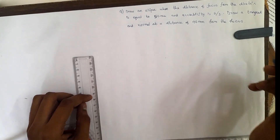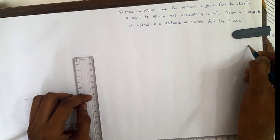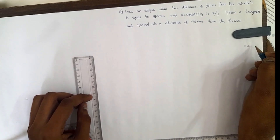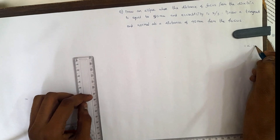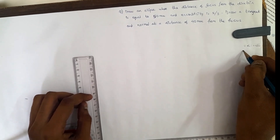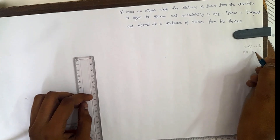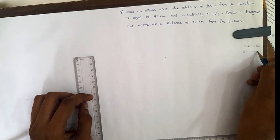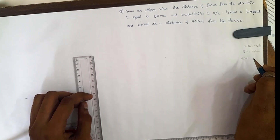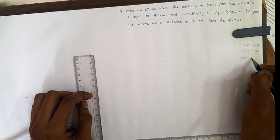Always remember: if eccentricity is less than 1, it is an ellipse. If eccentricity is equal to 1, it is a parabola. If eccentricity is greater than 1, it is a hyperbola.